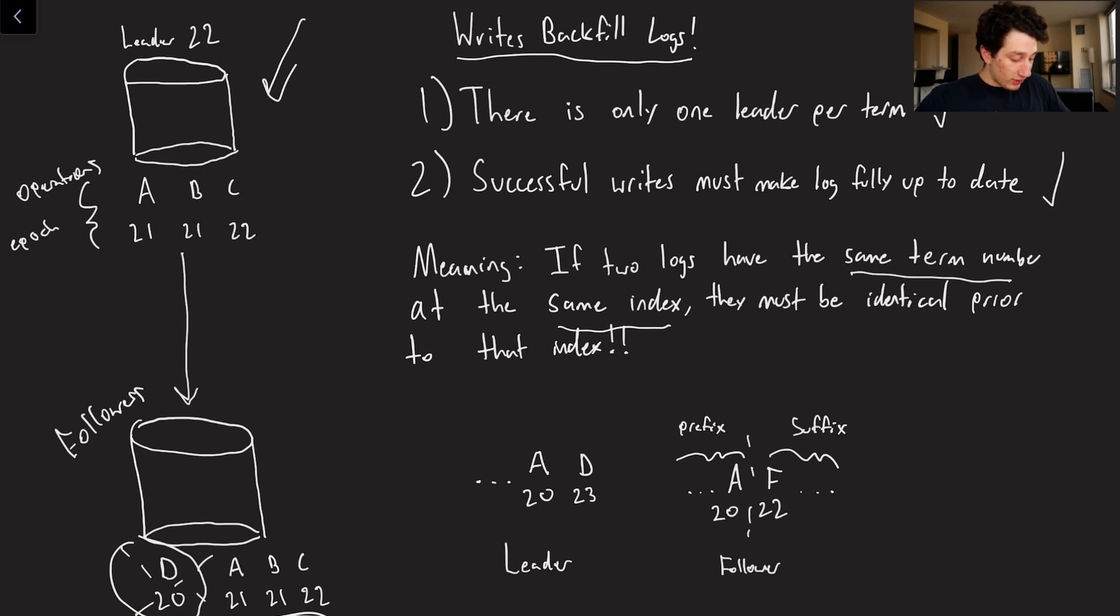So let's say this is index, I don't know, 10 and this is index 11 in this log of the leader. And then over here we've got index 10 and index 11 on the log of the follower. Because index 10 has the same term number on both the leader and the follower, we know that everywhere to the left of index 10 and everywhere to the left of index 10 on both the leader and the follower must be the same. And the term that we use to describe this part of the log in raft is called the prefix.